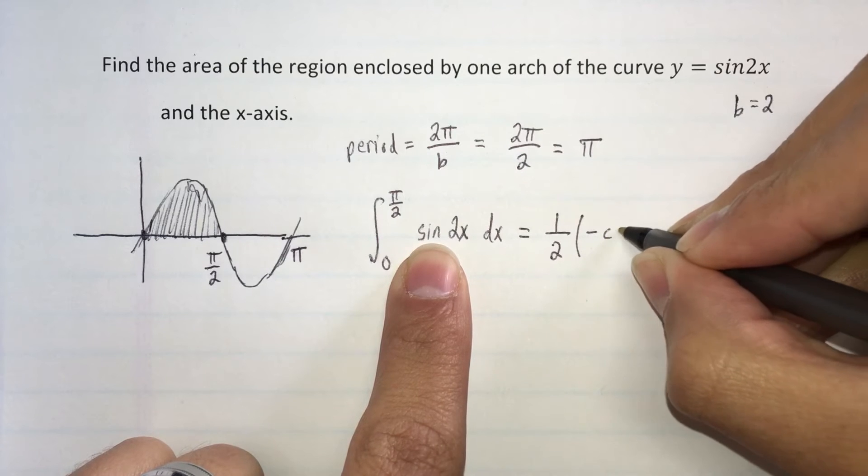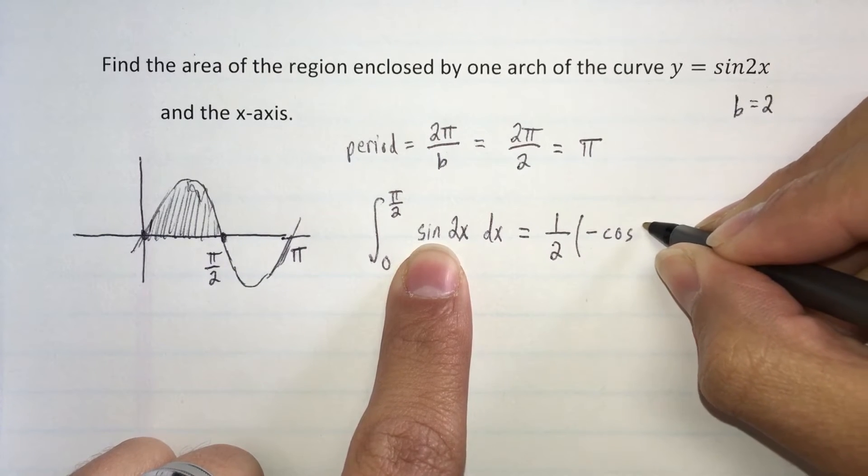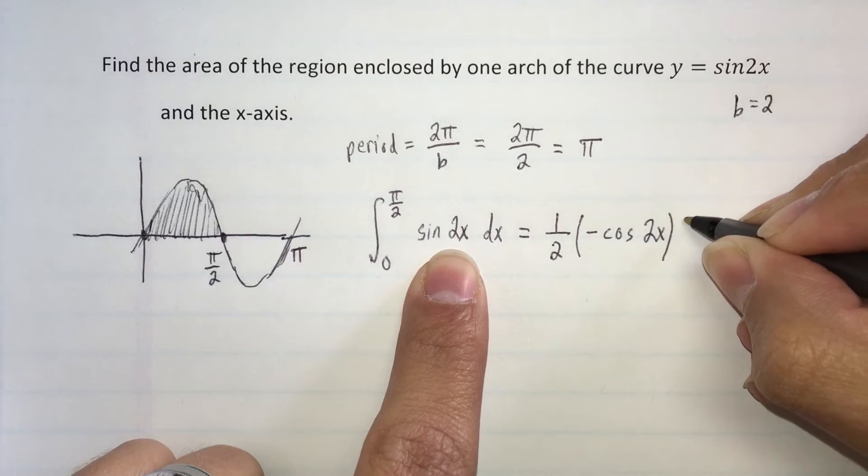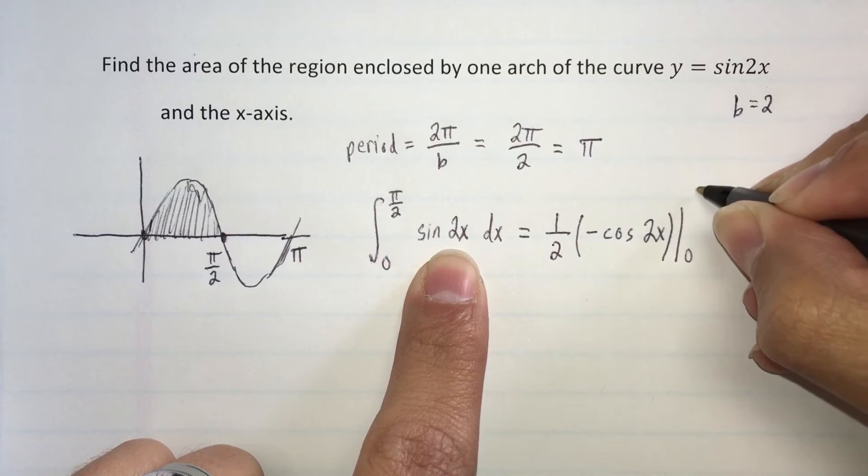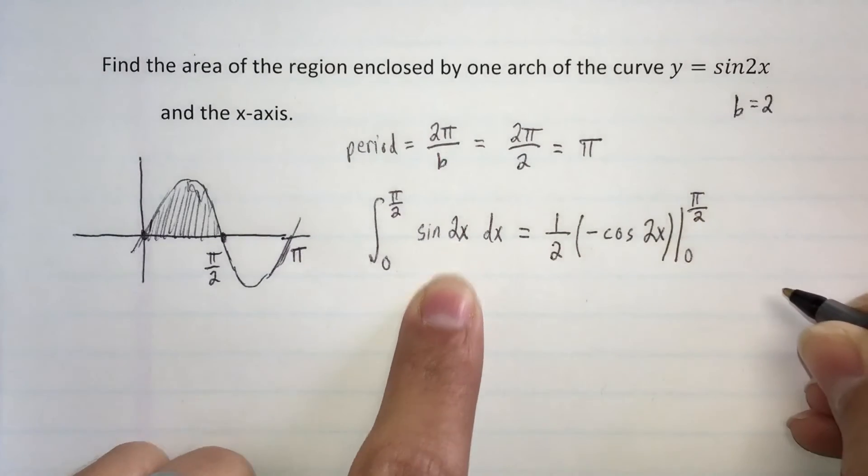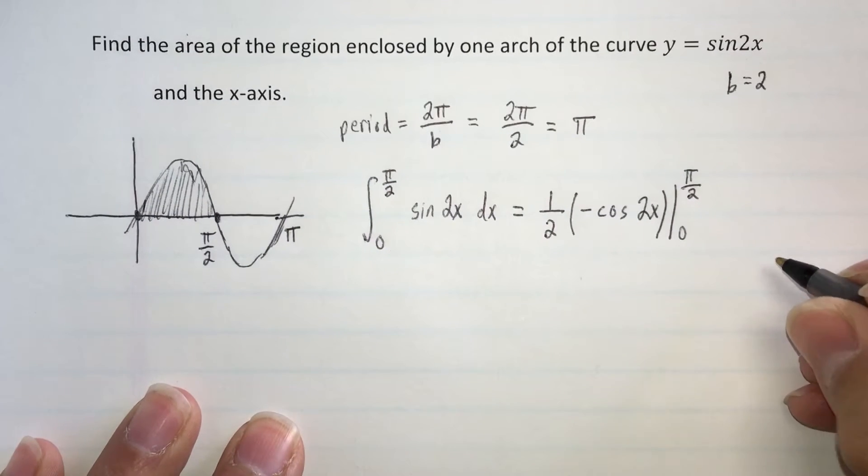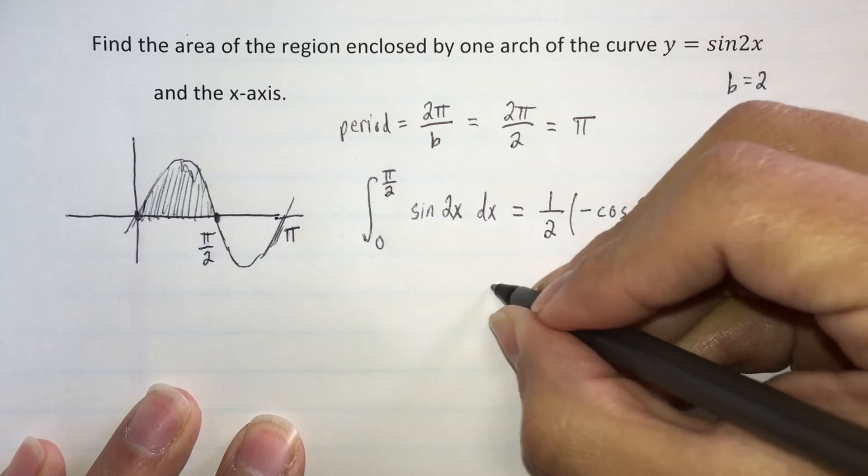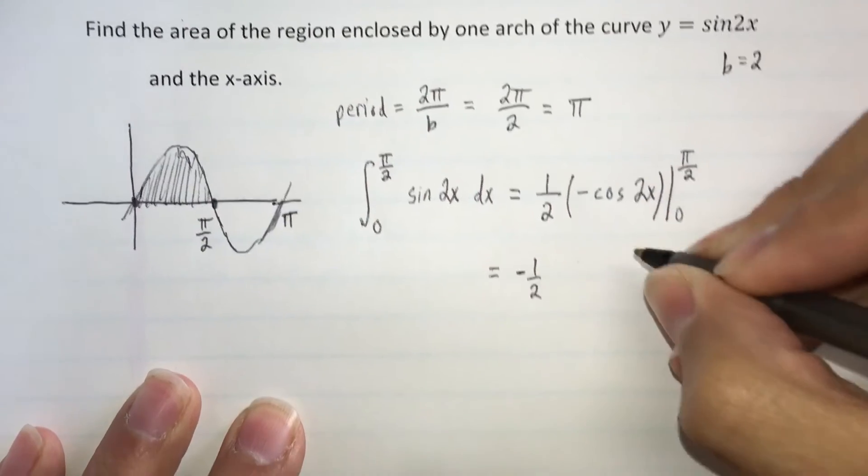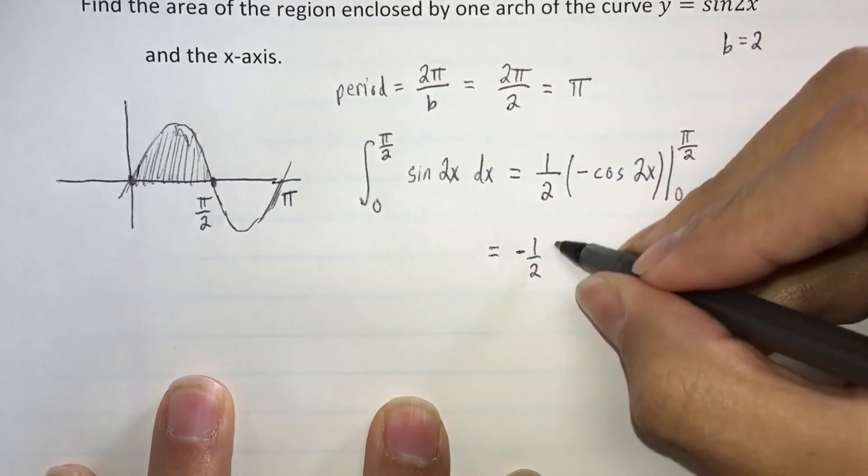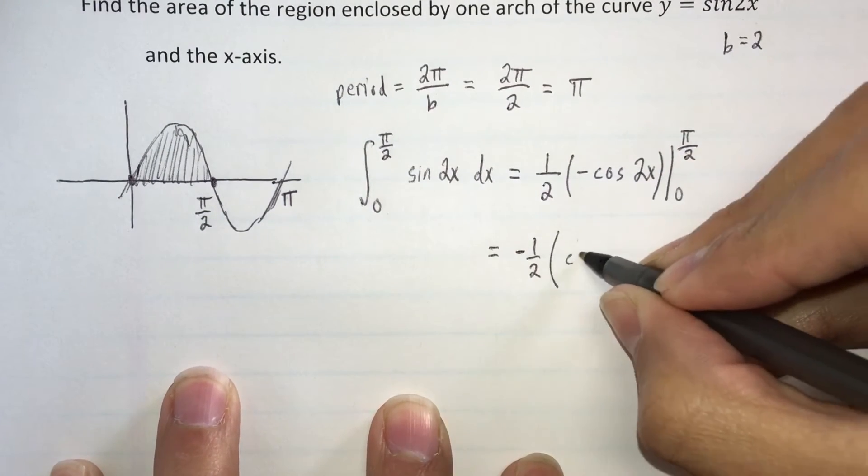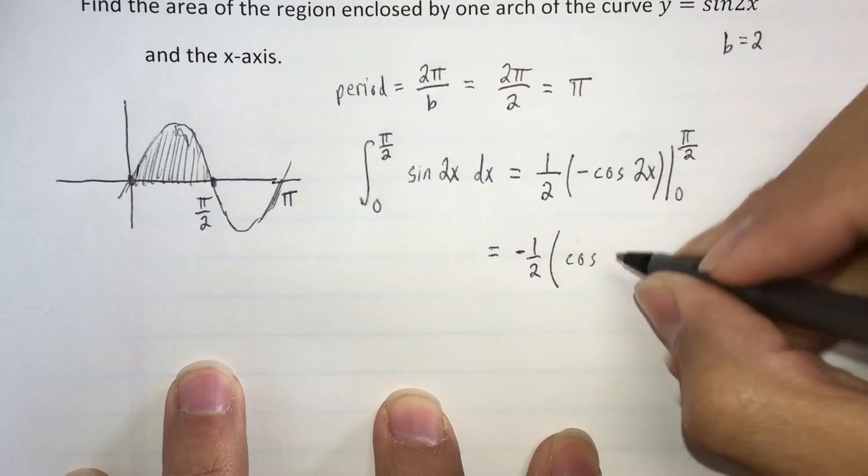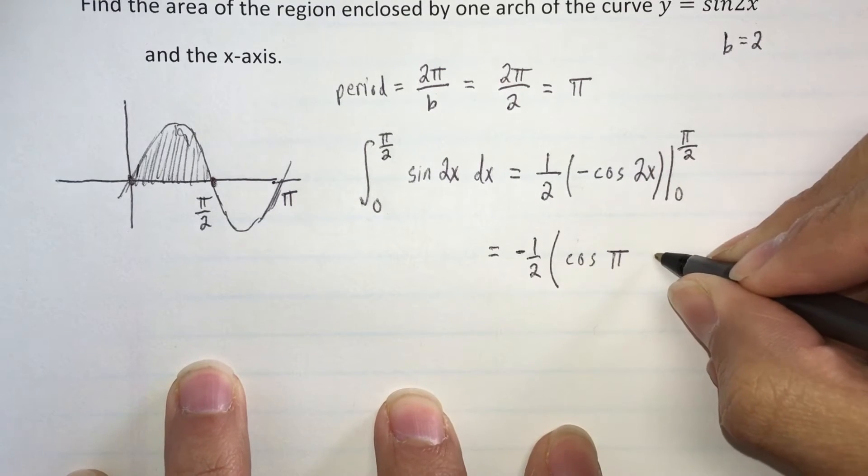And we have negative cosine of 2x, and we have to evaluate from 0 to π over 2. I can factor the negative out and say that this is negative 1/2.